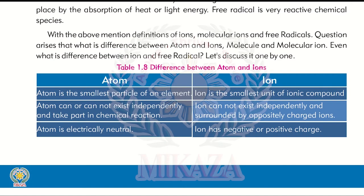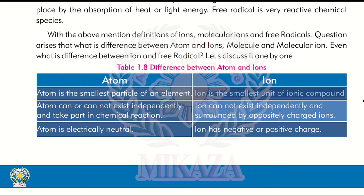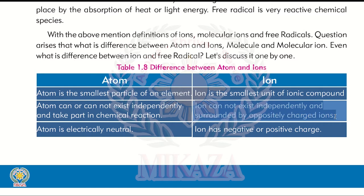Let's talk about the difference between an atom and an ion. An atom is the smallest particle of an element that is neutral. An ion is the smallest unit of an ionic compound. Atoms can or cannot exist independently and take part in chemical reactions — some atoms are so stable they don't need to react, while unstable ones do take part in chemical reactions. Ions cannot exist independently and are surrounded by oppositely charged ions.